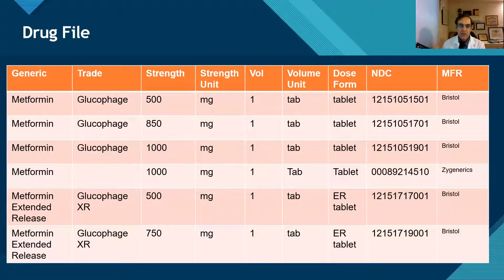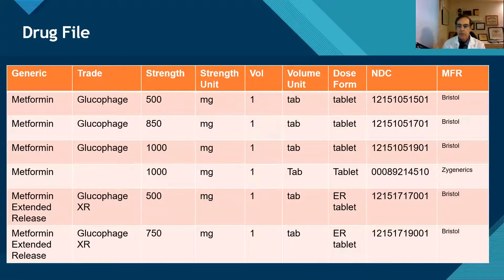What does a drug file look like in a computer system? When you're a pharmacy informaticist, you might be responsible for building this file and maintaining it. Here's just a quick example of a small file with: generic name, trade name, strength, strength unit, volume, volume unit, dose form, NDC (National Drug Code), and manufacturer.